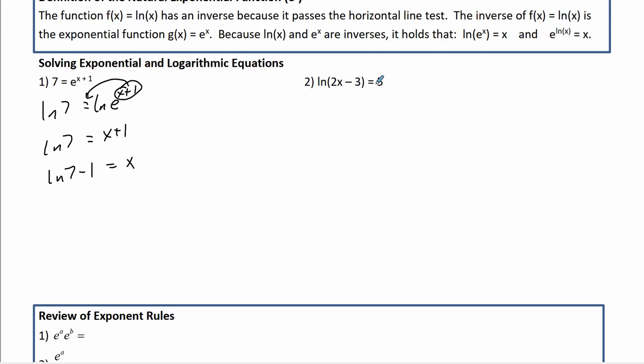Over here, I have ln of something equals 5. In order to get rid of ln, I take e to both powers, or both sides. e to that ln, and thus the 2x minus 3 is going to drop, equals e to the 5th. And I get 2x equals e to the 5th plus 3, divide by 2, and that's what x is equal to.